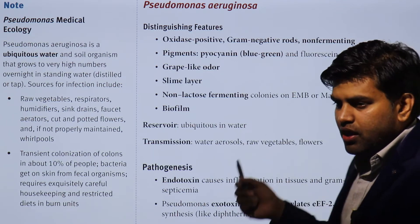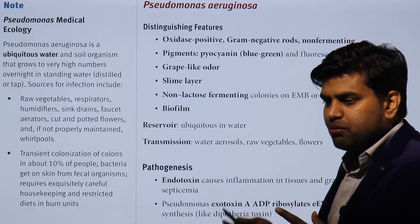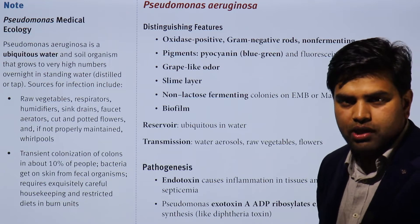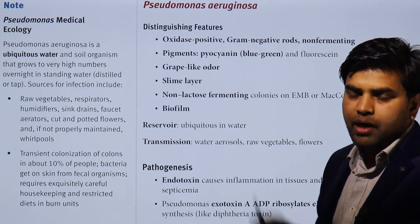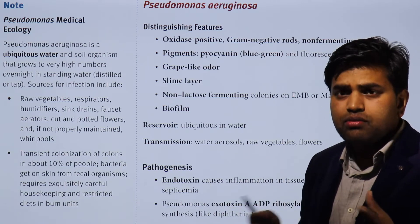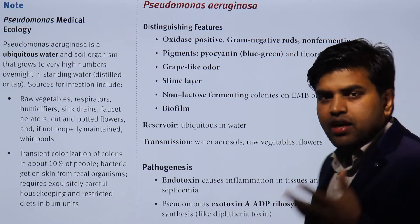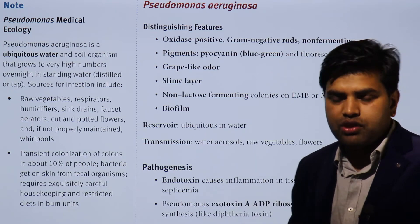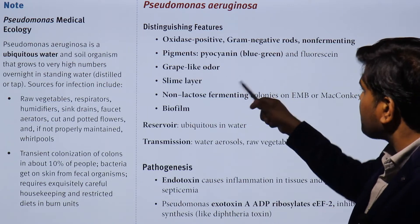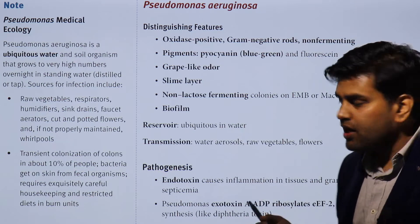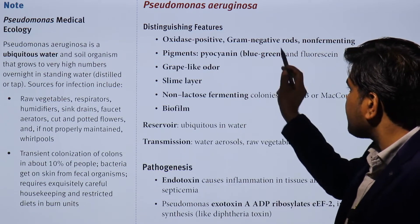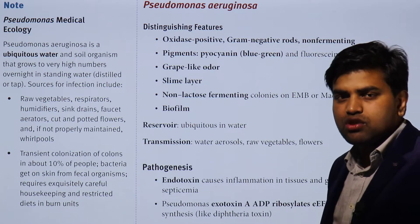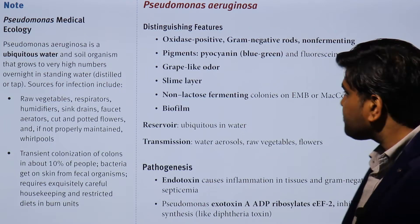Pseudomonas also produces pigments, making it a pigment-producing organism. It first became medically important when patients in burn units were found discharging blue or green colored pus. Initially, clinicians would diagnose Pseudomonas infection based on color alone. In resource-limited settings where culture was not possible, Pseudomonas was diagnosed on the basis of the odor and color of the pus, mainly in burn units. The four pigments produced are pyocyanin, pyoverdin, pyomelanin, and pyorubin. The blue color is from pyocyanin and green from pyoverdin. These pigments also act as virulence factors, producing reactive oxygen species and fluorescence.